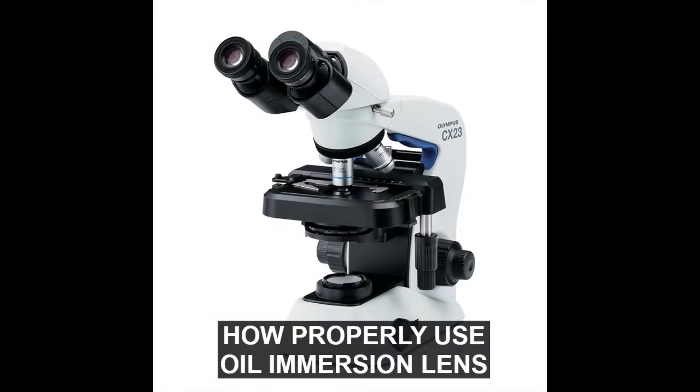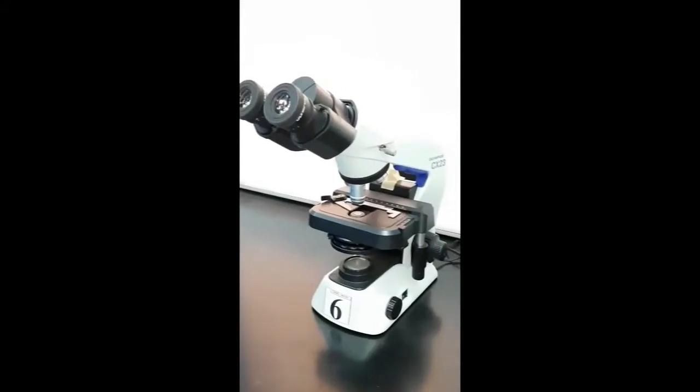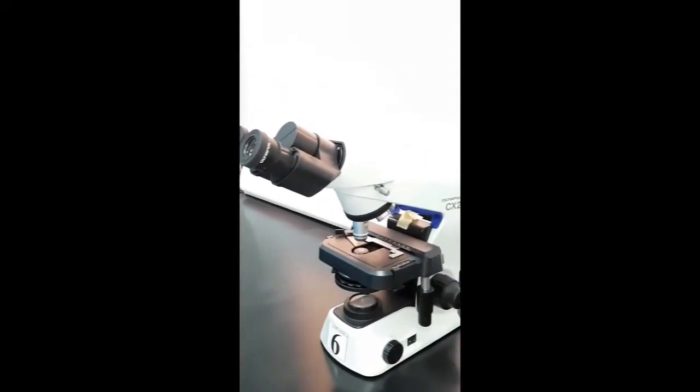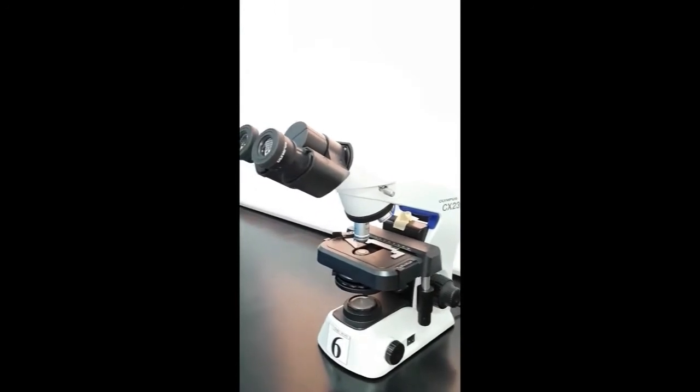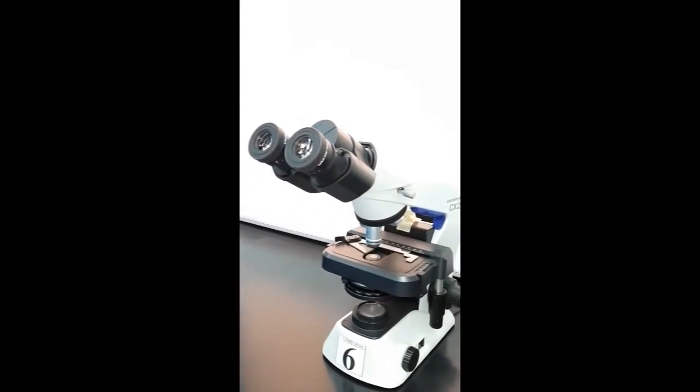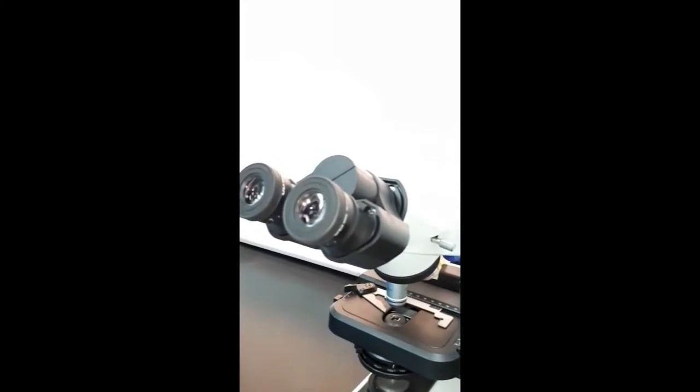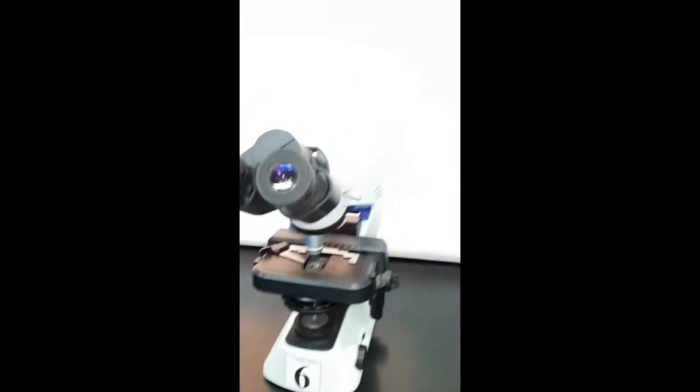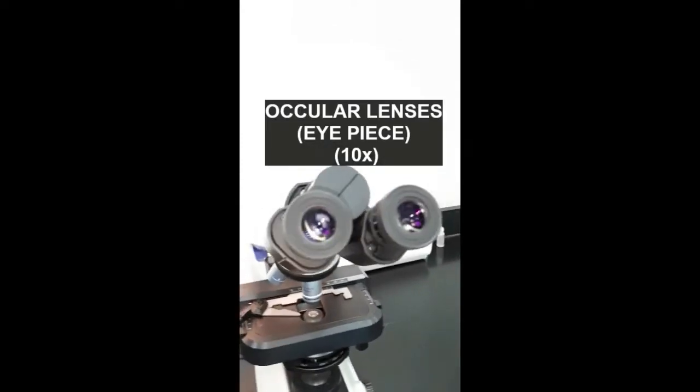Hi all, this video briefly describes parts of the compound light microscope and demonstrates the proper way to use the oil immersion objective lens. First, I will explain the parts of the microscope. The first part is the eyepiece, also known as the ocular lenses. This is the part of the microscope you use to look through, and it has a magnification of 10x.